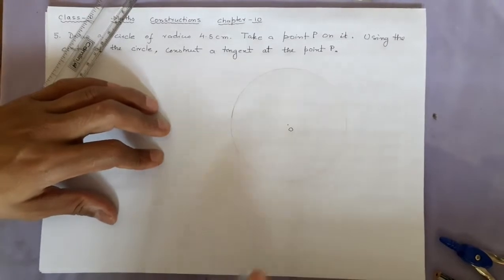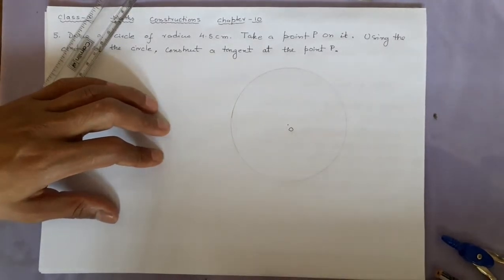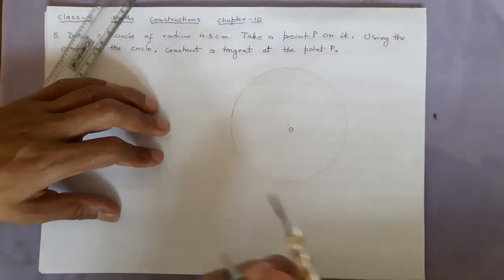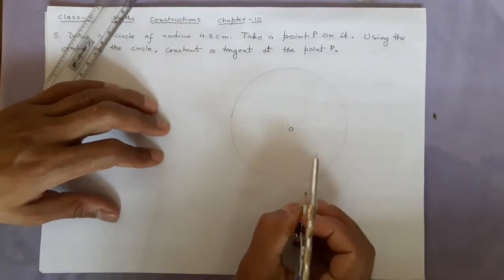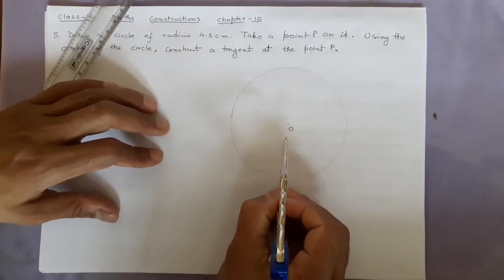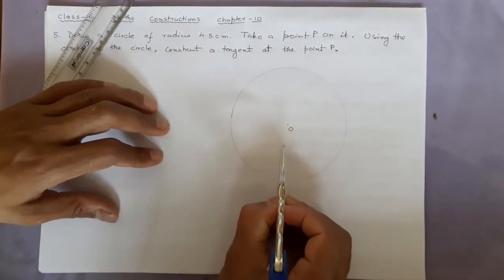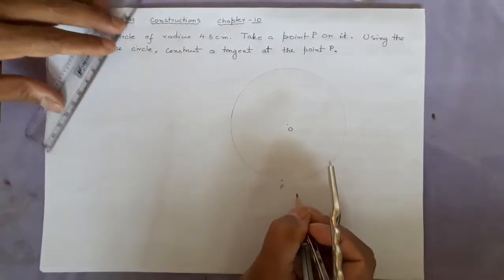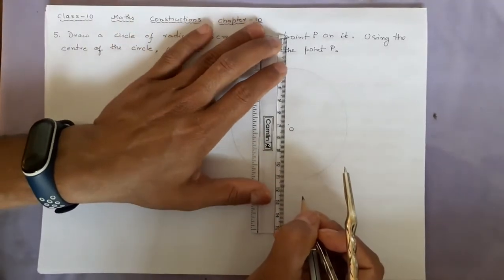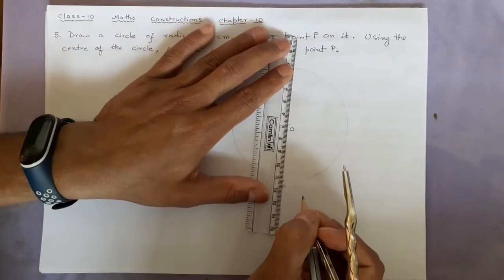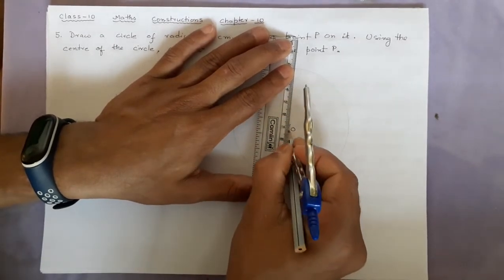The center is O. Now we take a point P on the circle. We will join these two points O and P.